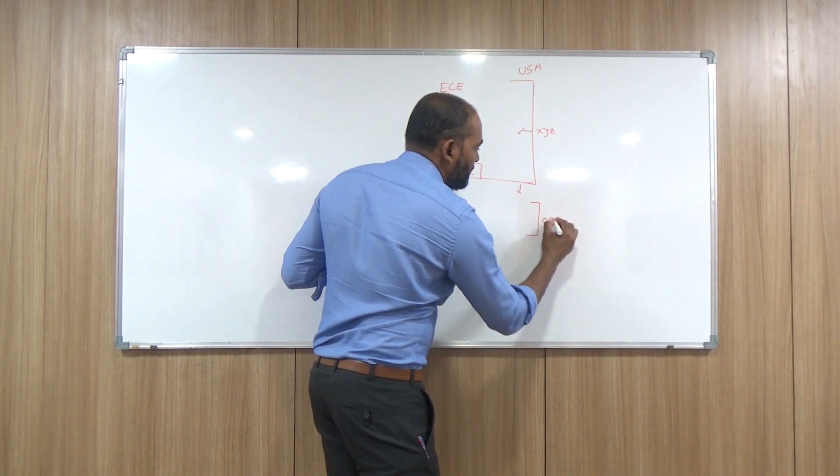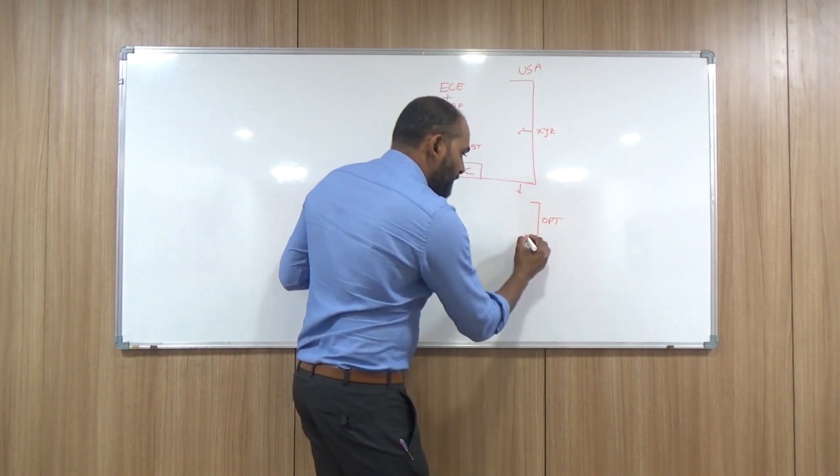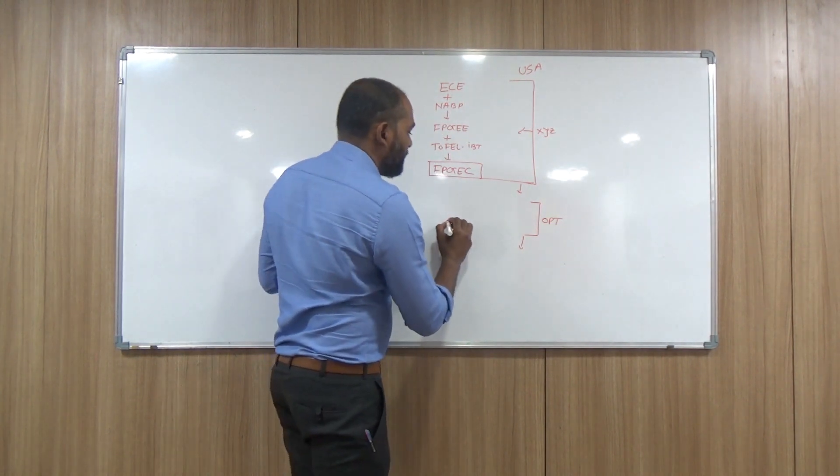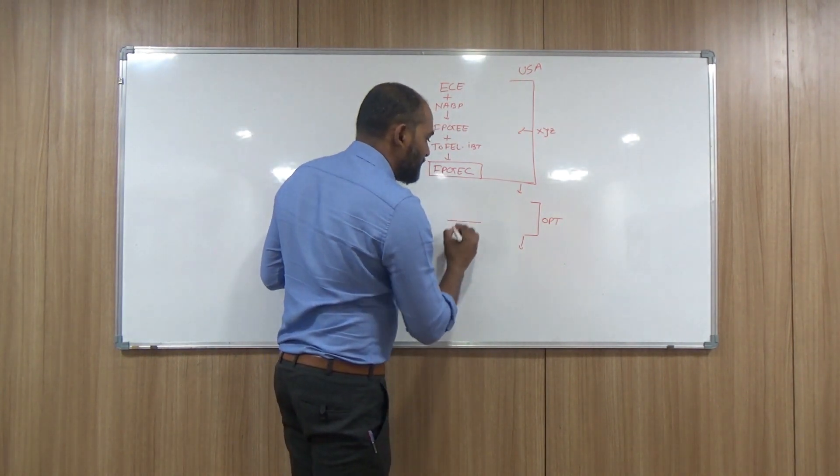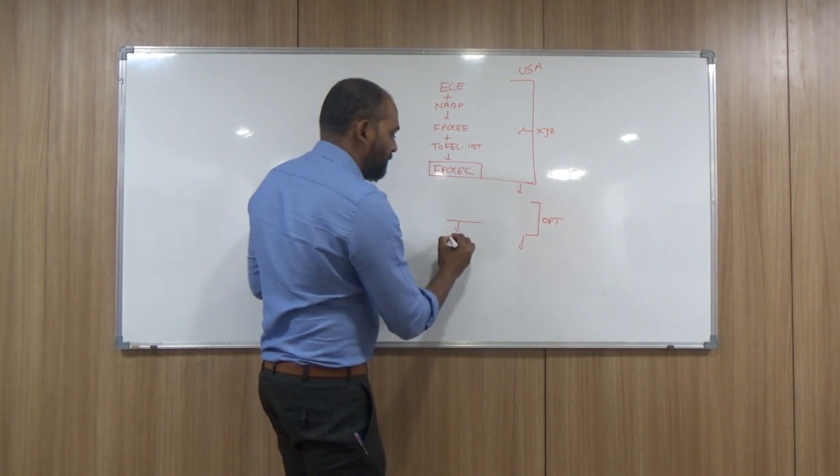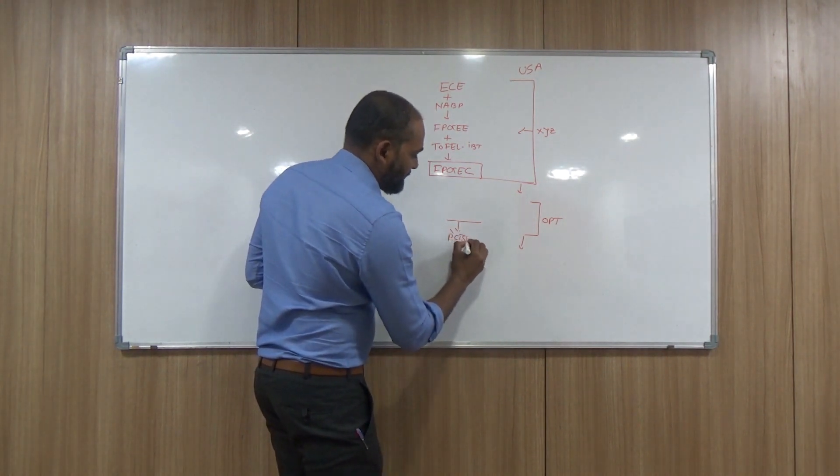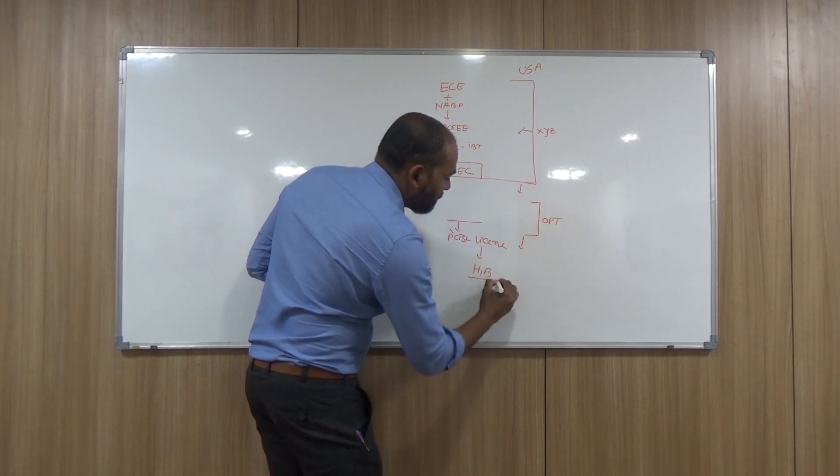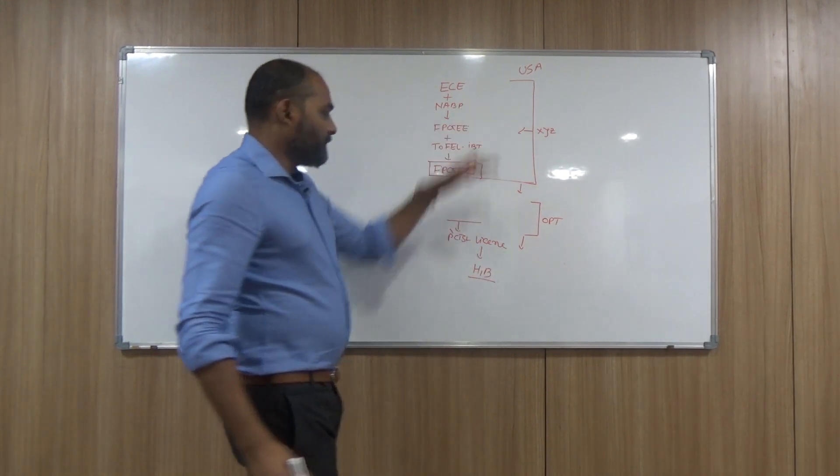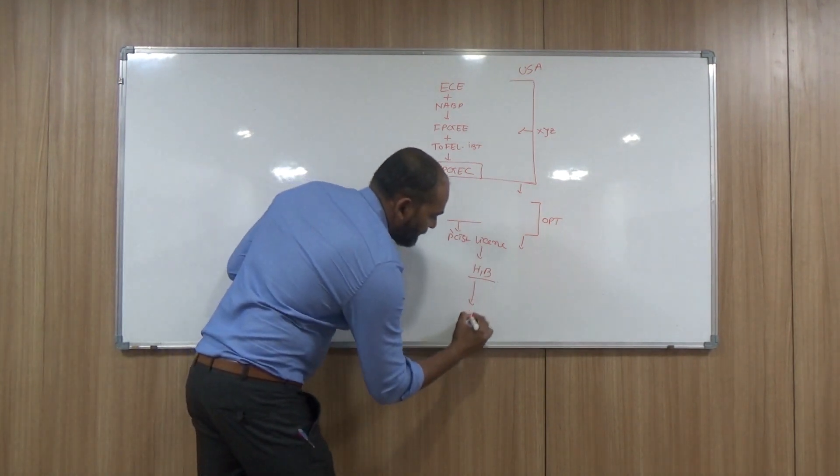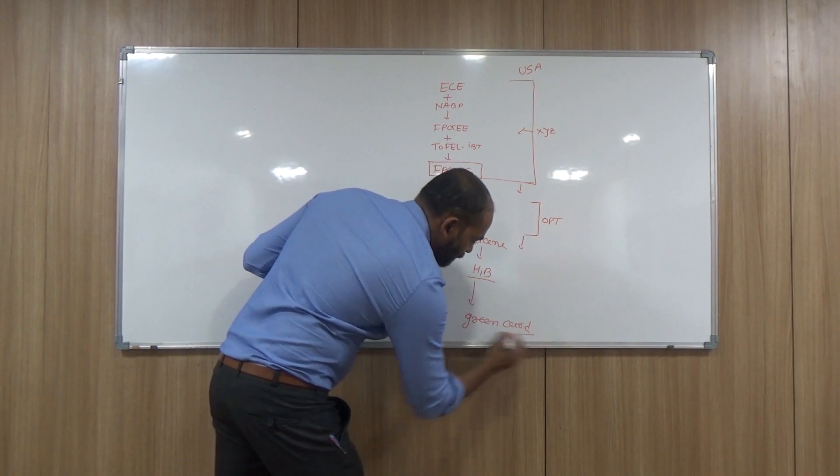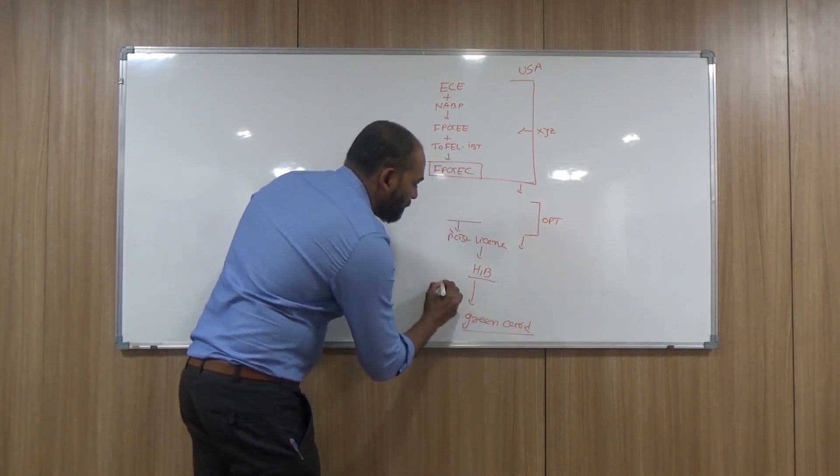After that, what happens? Normally in the US, after studying, you will get OPT. During OPT time, you can complete your NAPLEX, MPJE, and training and become a licensed pharmacist. After that, you will probably get H1B. So after H1B to green card is a long journey; it takes a longer period of time.